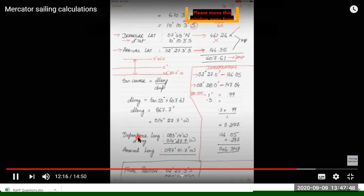So we got the initial position, arrival latitude and arrival longitude. We have done the interpolation here for getting 27.3.